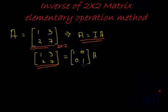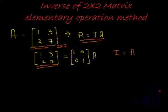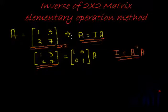All operations that we perform on the left-hand side matrix, we repeat on the identity matrix on the right-hand side. When we make the left side an identity matrix, the right-hand side becomes A⁻¹·A, which equals the identity — this is the property we use to find the inverse using elementary operations.